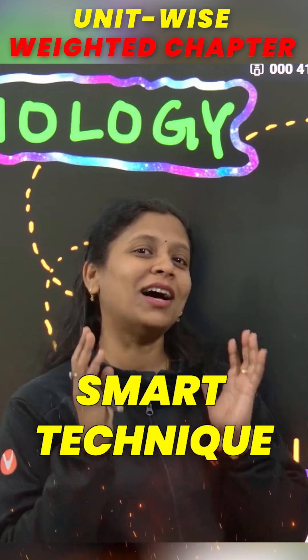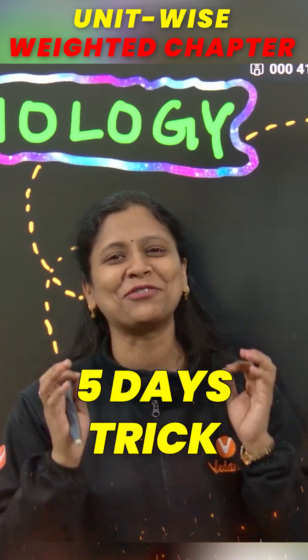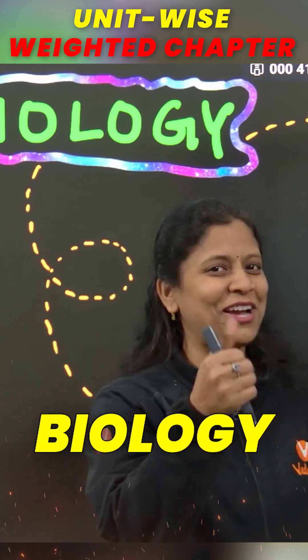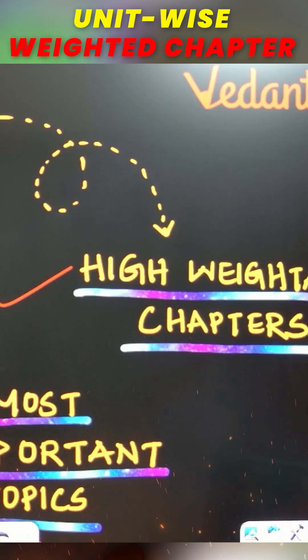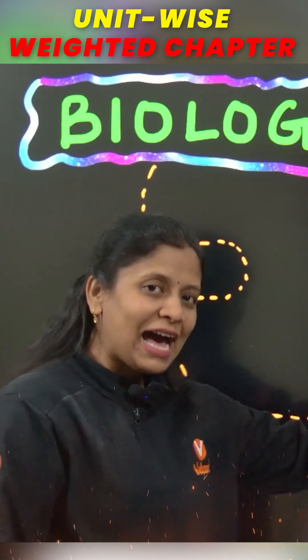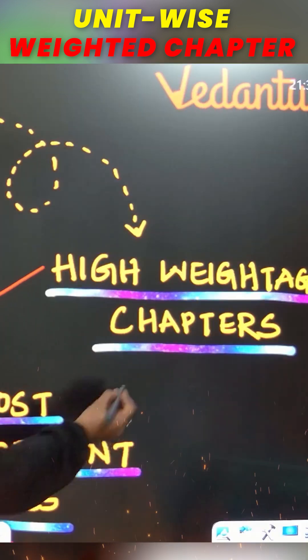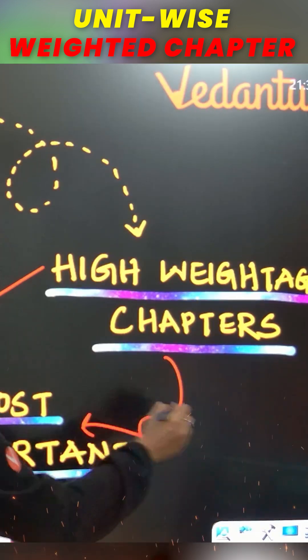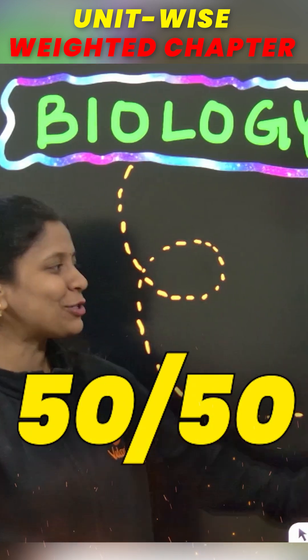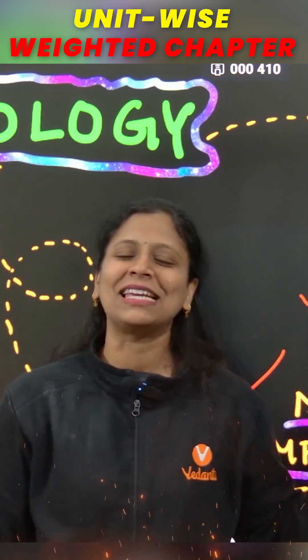There is a smart technique and a finance trick to get 50 by 50 in biology. High-weighted chapters and most important topics. In those high-weighted chapters, we can easily score 50 by 50 or at least 45 plus easily.